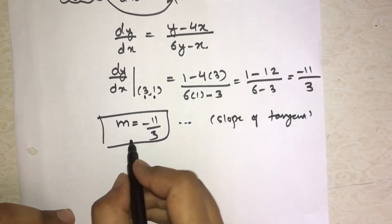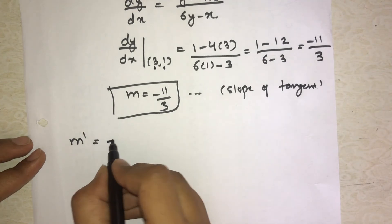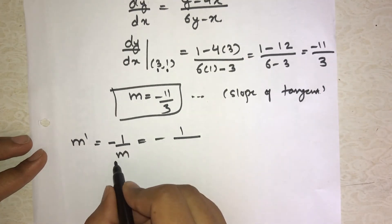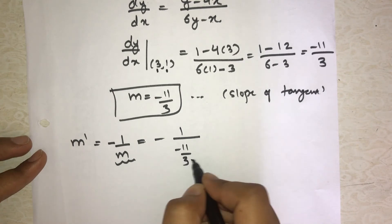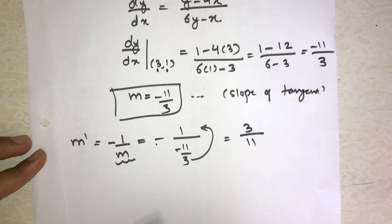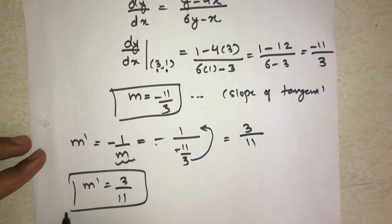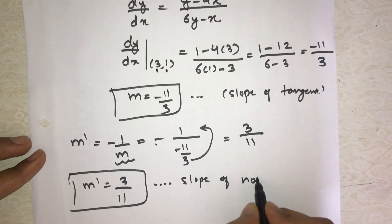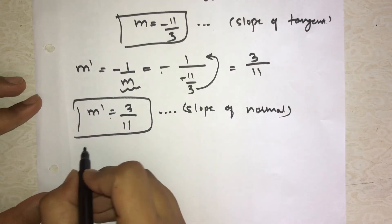dy/dx means our m which is -11/3. This is the slope of tangent. Second step, what do we have to find? By using this m, we have to find m dash. For m dash the formula we saw is -1 upon m. So let's find it: -1 upon our m which is -11/3. This 3 will go to numerator, and minus minus will get cancelled. So we get 3/11.